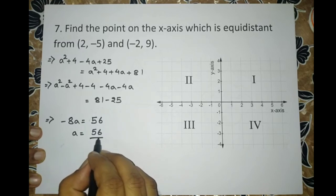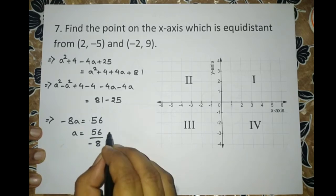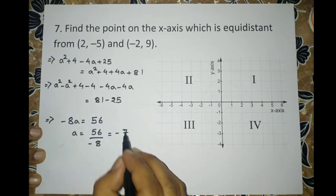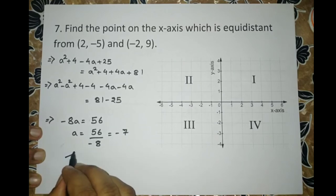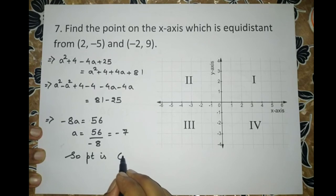Don't write it as 56 plus 8. It is division because the relationship changes, not the sign. So A is minus 7. So our required point is minus 7 comma 0.